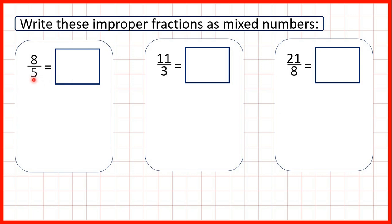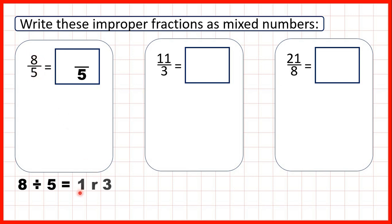To change an improper fraction to a mixed number, remember that the denominator of the fraction in the mixed number will be the same as the denominator in the improper fraction. Now we need to divide 8 by 5, because a fraction is really a division. 8 divided by 5 gives us 1 remainder 3.